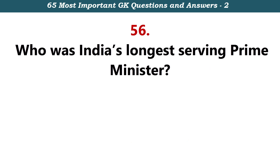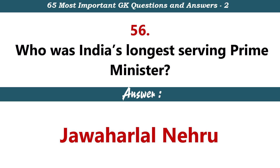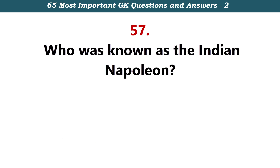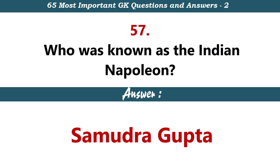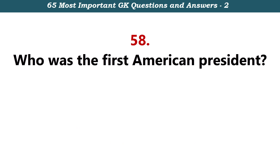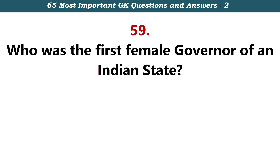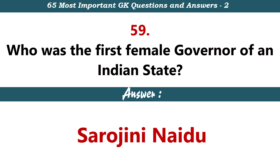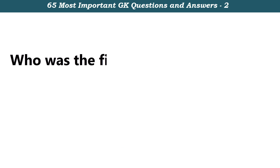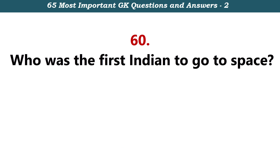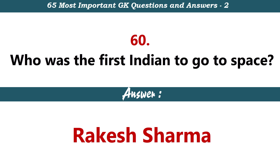Who was India's longest serving prime minister? Jawaharlal Nehru. Who was known as the Indian Napoleon? Samudra Gop. Who was the first American president? George Washington. Who was the first female governor of Indian state? Sarojini Naidoo. Who was the first Indian to go to space? Rakesh Sharma.